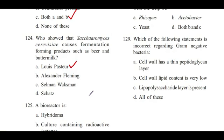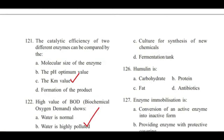Question 125: A bioreactor is — hybridoma, culture containing radioactive isotopes, culture for synthesis of new chemicals, or fermentation tank? Answer is D, fermentation tank.